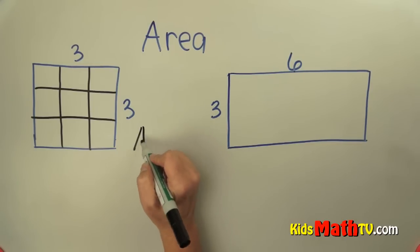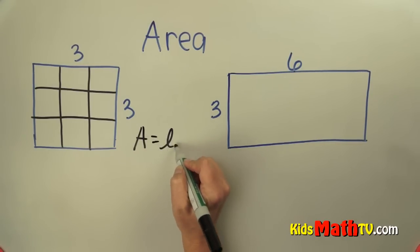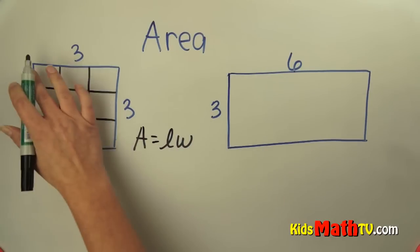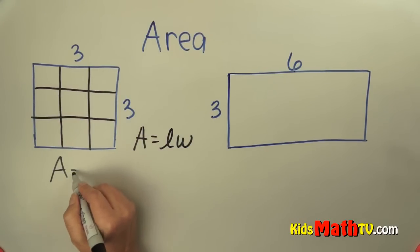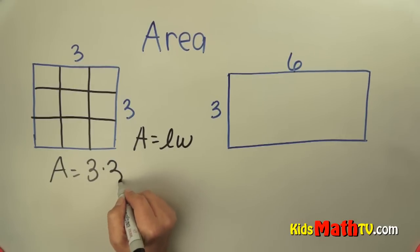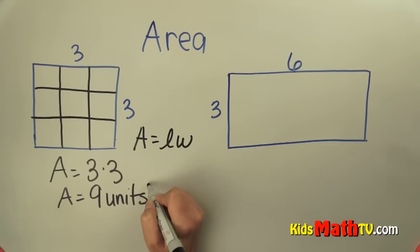We have a formula. Area equals the length times the width. Area equals three times three, and the area equals nine units—square units, or nine square units.